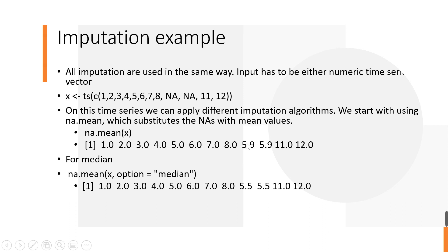What imputeTS will do, in case we want to mean imputation, we just say na.mean, then x. Here we see the mean of the values from 1 to 12. The mean is 5.9, so you can see that it has used 5.9 to replace the two missing values. And in case we want to use median, then we say na.mean x option equals median. And that way, you have 5.5, which is actually the median.